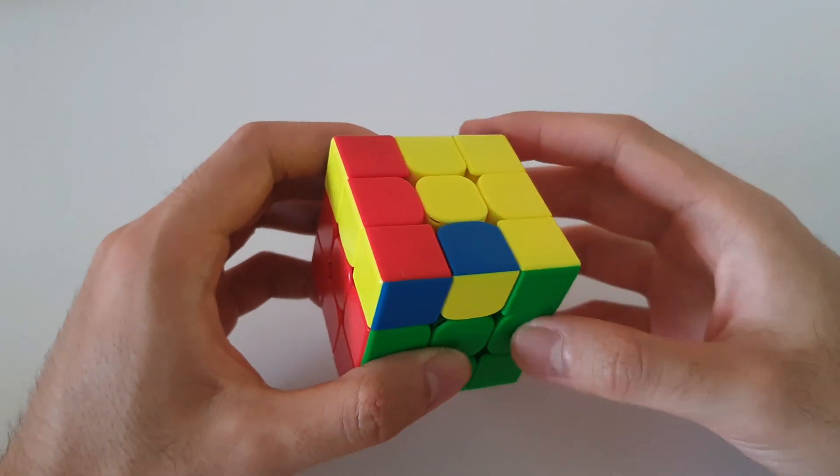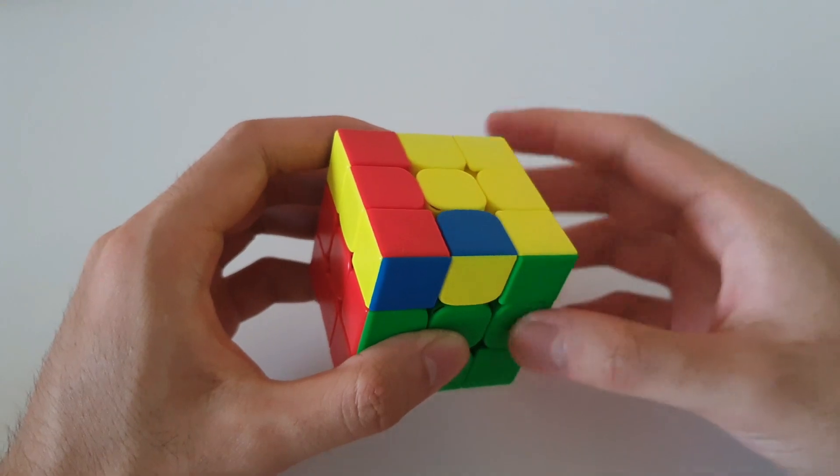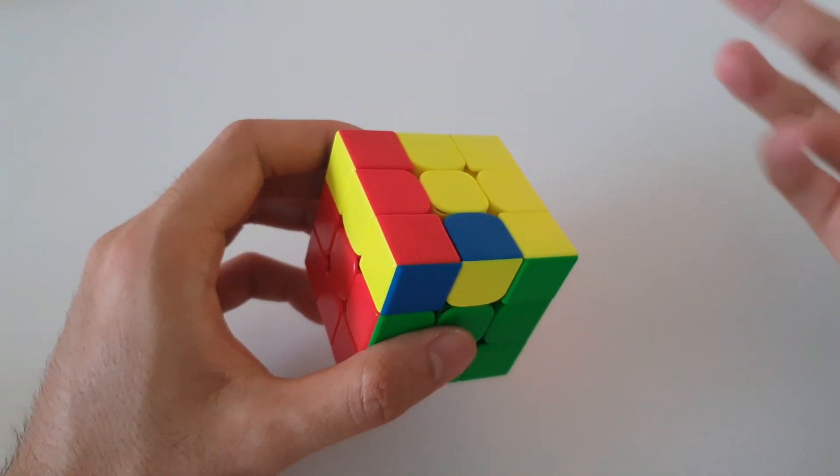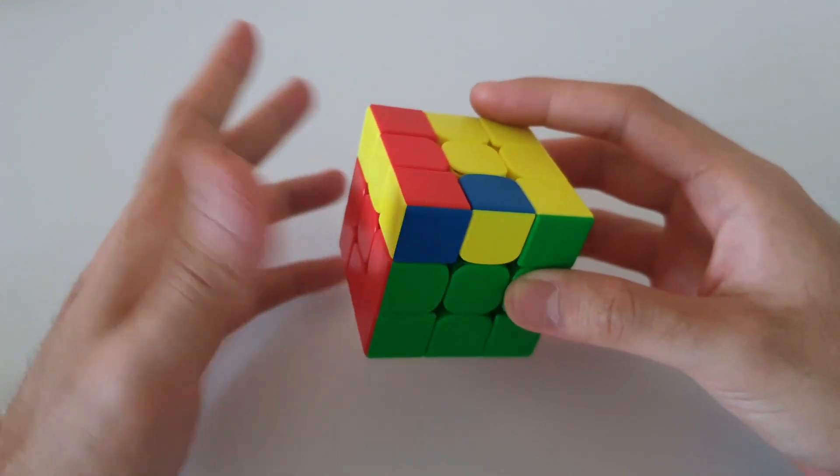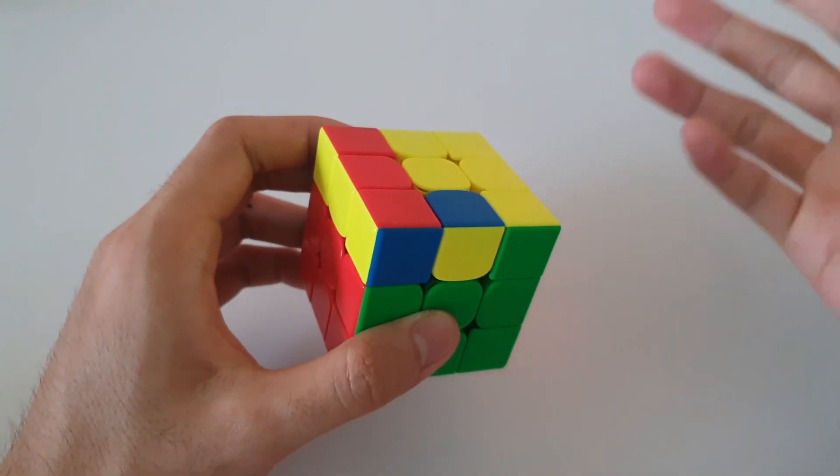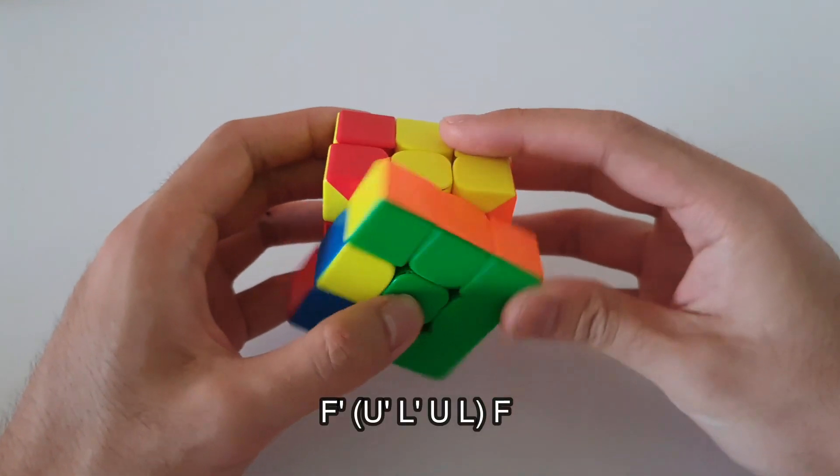So moving on to the next P-shaped case. This one is actually the mirror image of the previous P-shaped case. And because it is a mirrored case you can actually use the same algorithm but with your left hand to solve this case as well. So for this case the algorithm goes as follows. So you start with an F' move,